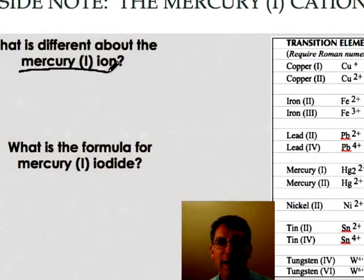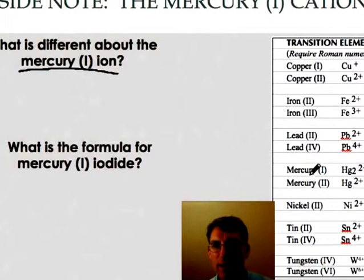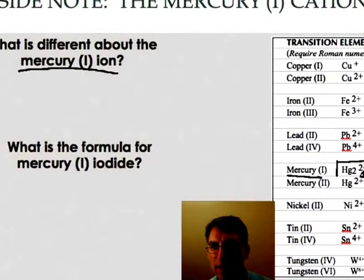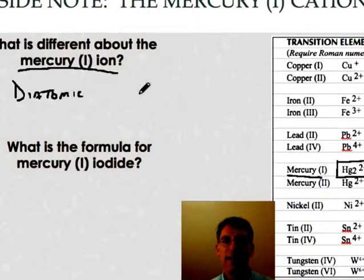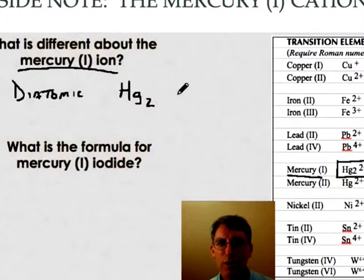The mercury one ion is slightly different than all the other ions in here. And if you take a look, mercury one, right here, mercury one, exists this way. And it's different because it's diatomic. And what that means is that it occurs as an Hg2. Two mercuries come together to give you a plus two charge.